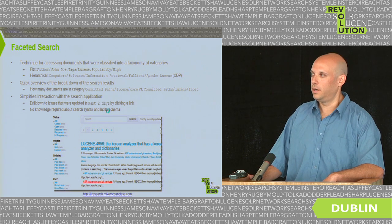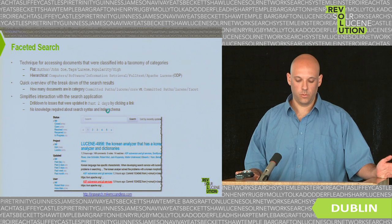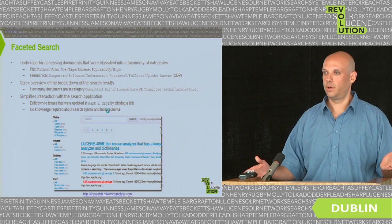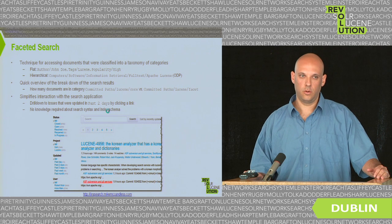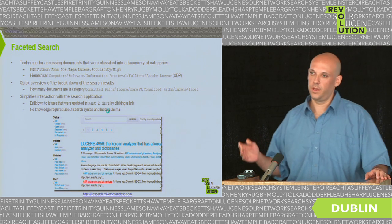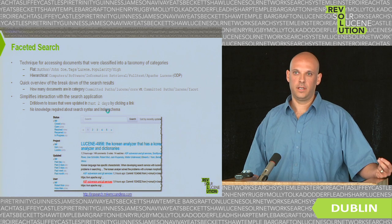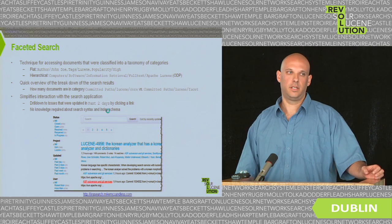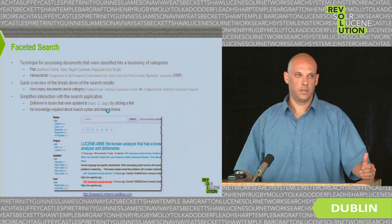Second, faceted search helps users navigate results because it masks away from them the exact syntax of the search query. For example, if you want to narrow down to issues updated in the past two days, the user doesn't need to know how to construct a range query or whether to use millisecond granularity. It also masks away how the index schema looks — whether it's a status field with a capital S, lowercase, or called 'stat' with an underscore.